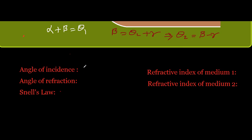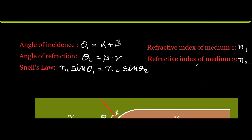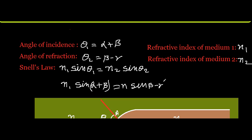So from this, theta one equals alpha plus beta and theta two equals beta minus gamma. The refractive index of the first medium is n1 and the second medium is n2. Snell's law states that n1 sin theta1 equals n2 sin theta2. Substituting these values, we get n1 sin(alpha plus beta) equals n2 sin(beta minus gamma).